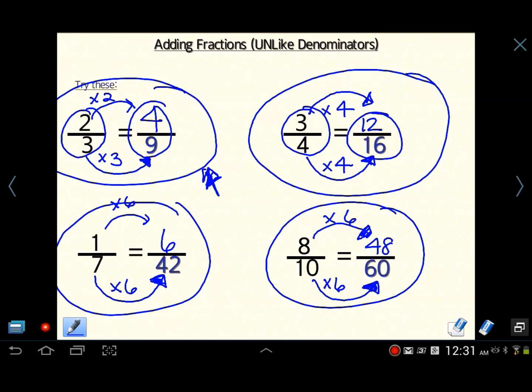This entire process of changing the fraction into an equivalent fraction. Remember, equivalent means equal. We're making equal fractions. We're not changing the value. Three-fourths still equals twelve-sixteenths. One-seventh equals six over forty-two. We're just changing the fraction around.